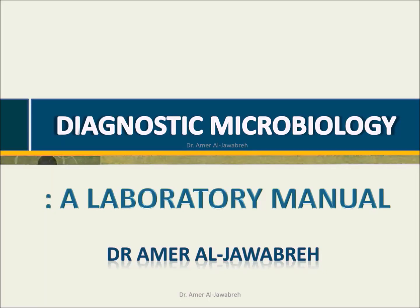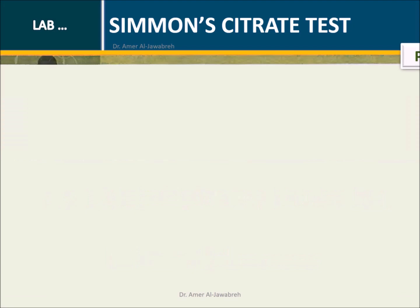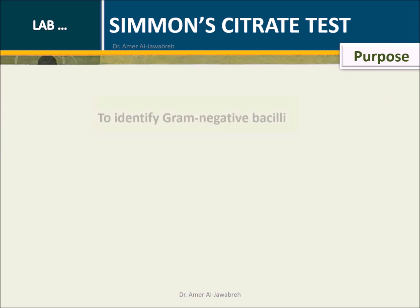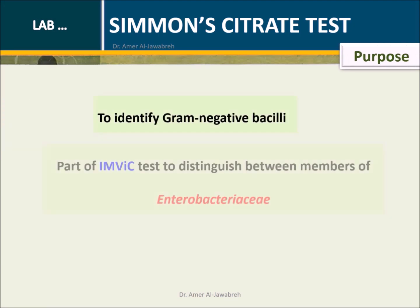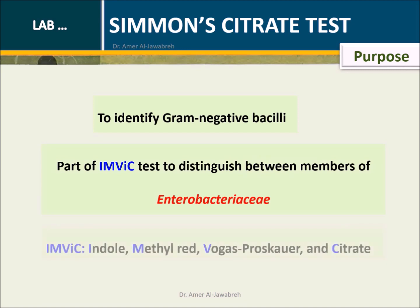Diagnostic Microbiology: A Laboratory Manual. Simmons citrate test — Purpose: to identify Gram-negative Bacilli. This test is part of the IMVIC test, used to distinguish between members of Enterobacteriaceae.